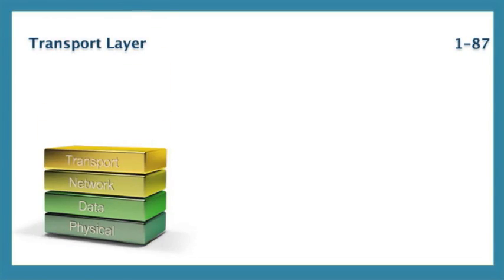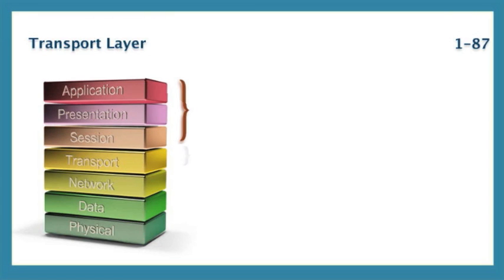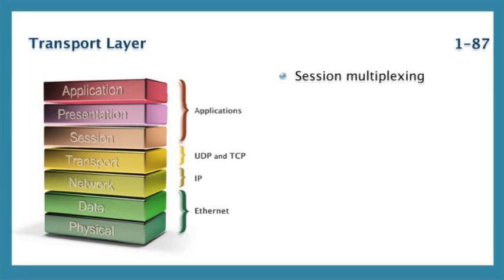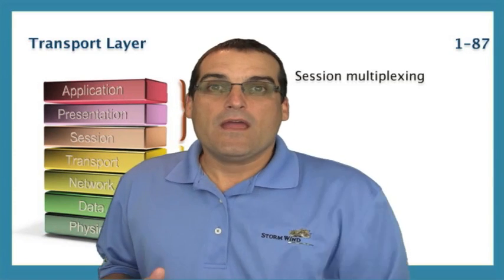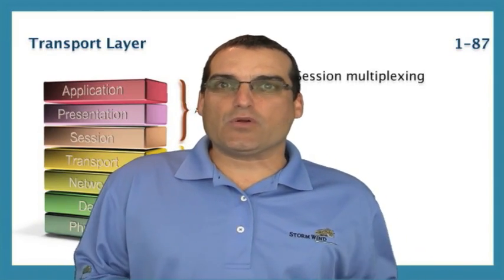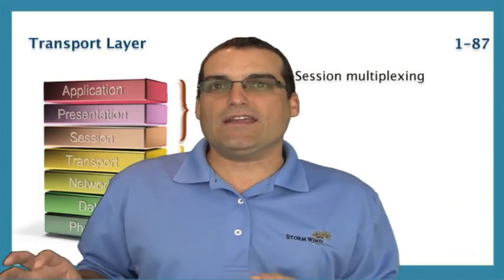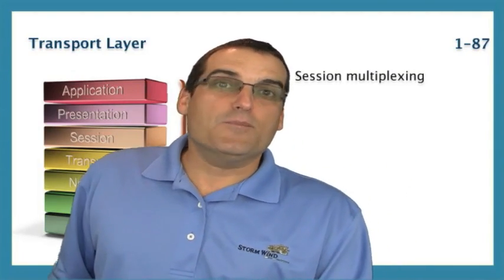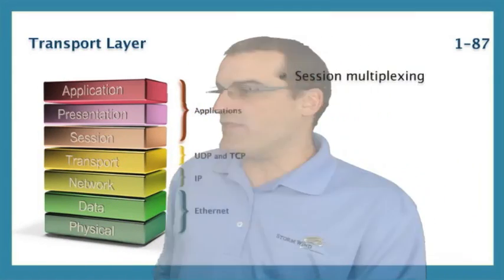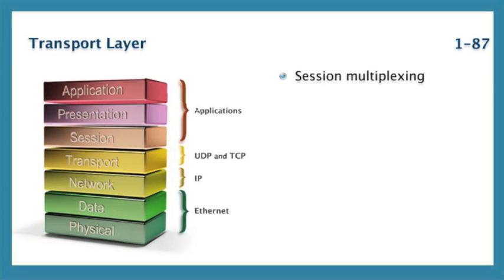Remember what we said about the transport layer so far? We emphasized that this particular layer would be helping us send data reliably or unreliably through the network infrastructure. Something else that the transport layer does is session multiplexing — meaning you can easily have several instances of SMTP and POP running, many different instances of web browsers running, engaged in many different sessions all simultaneously.